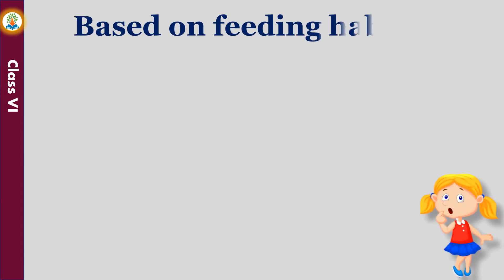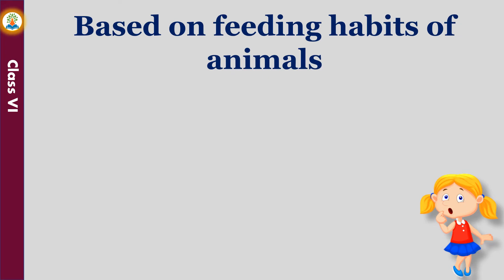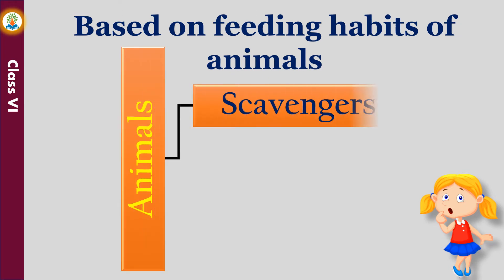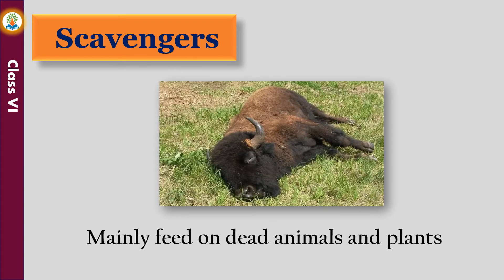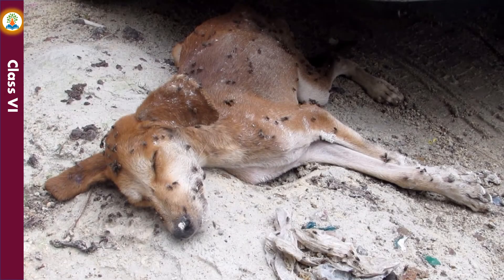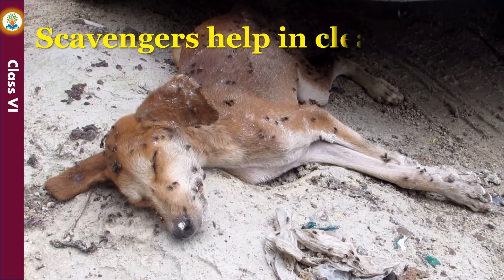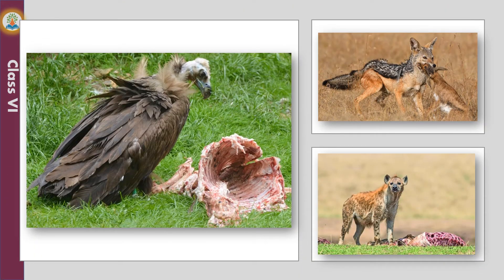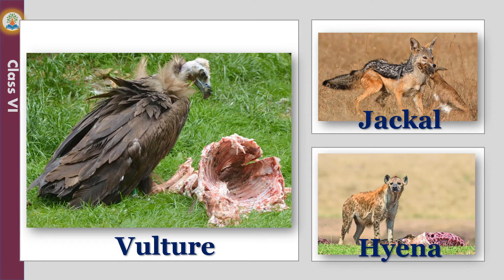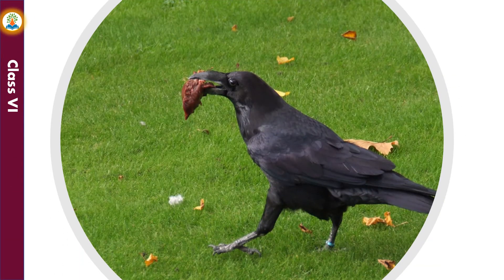There are some other groups in which animals are classified based on their feeding habits. These are scavengers, decomposers, and parasites. Scavengers mainly feed on dead animals and plants. The dead remains of animals produce foul smell and can spread infection. Scavengers help in cleaning the environment. Scavengers can be either carnivores, such as vulture, jackal, and hyena, or omnivores, such as crow.